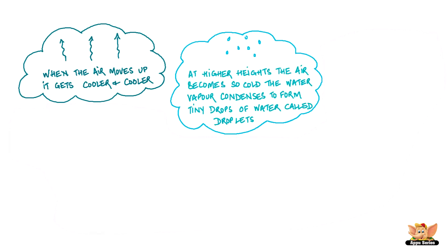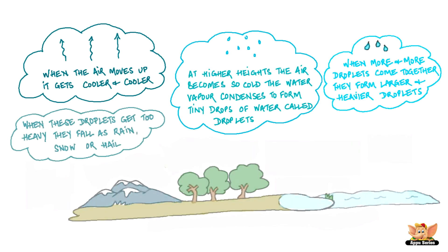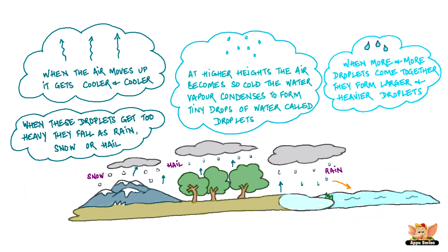These tiny droplets remain floating in air and appear to us as clouds. When more and more droplets come together, they form larger and heavier droplets. When these droplets get too heavy, they fall as rain, snow or hail.